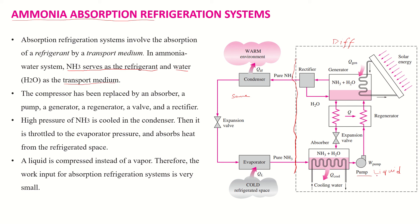We need less energy to compress a liquid compared to compressing a vapor. Pure ammonia coming out of the evaporator is absorbed in the absorber. The absorber is used to absorb ammonia into water, and this is an exothermic reaction — when ammonia is absorbed in water, heat is released.